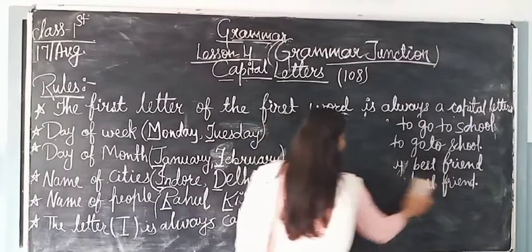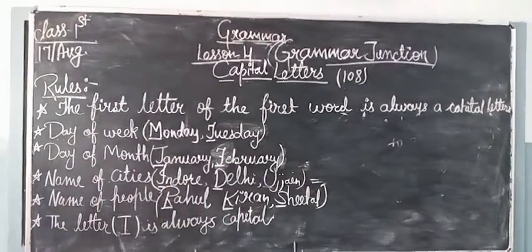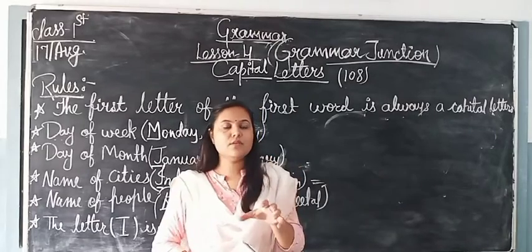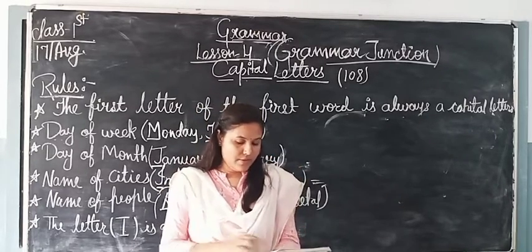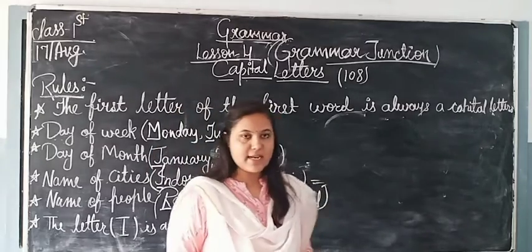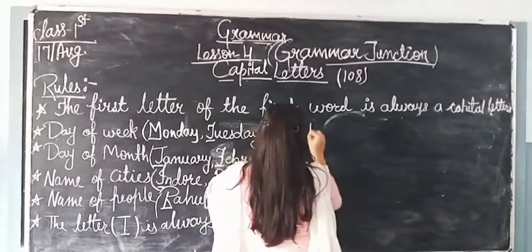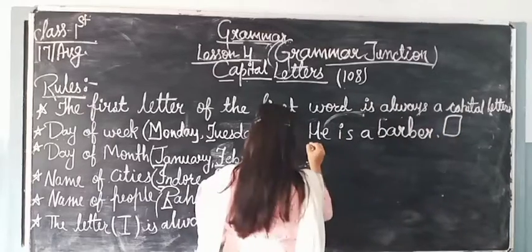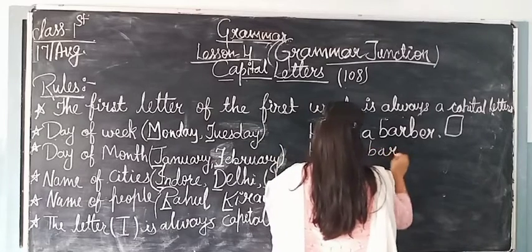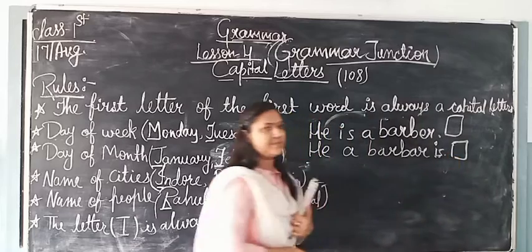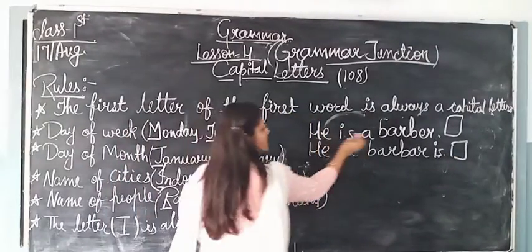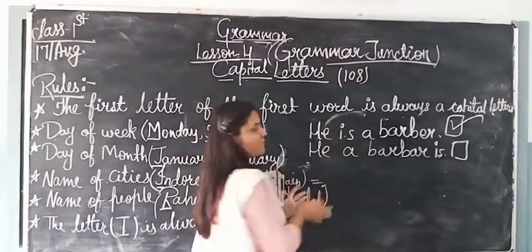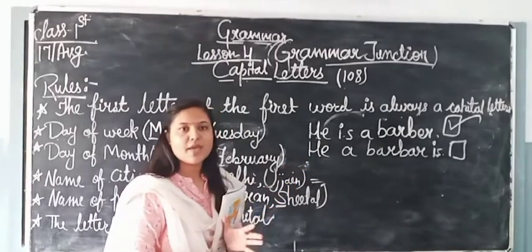Suppose you rearrange the words to make a meaningful sentence. A sentence is a group of words that makes complete sense. For example: 'He is a barber.' Or consider: 'He a barber is.' Which is correct — 'He is a barber' or 'He a barber is'? Of course the first is right, because this group of words makes a complete and meaningful sentence.